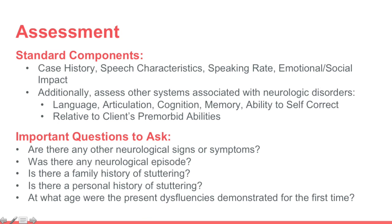There are also some important questions to ask during the case history portion, including: Are there any neurological signs or symptoms? Was there any neurological episode? Is there a family history of stuttering? Is there a personal history of stuttering? And at what age were the present disfluencies demonstrated for the first time?